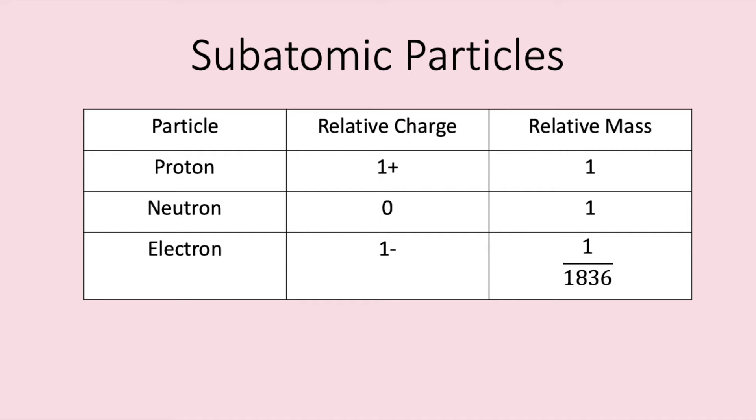Protons have a positive charge. Neutrons are neutral or have a relative charge of 0. Electrons are negative so have a relative charge of minus 1. An atom has the same number of protons as electrons. This means the overall charge of an atom is neutral.